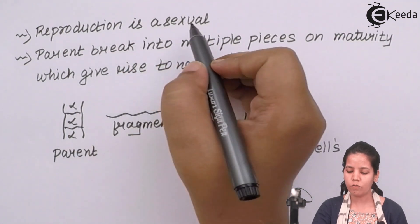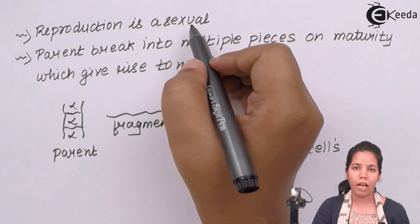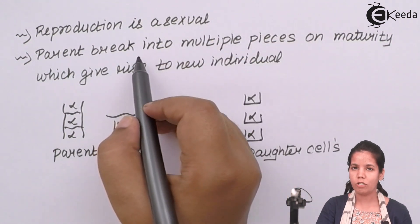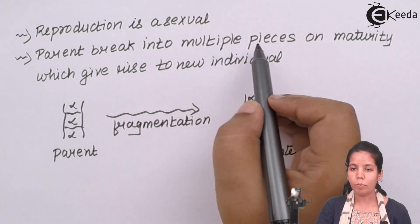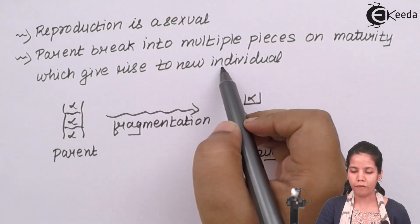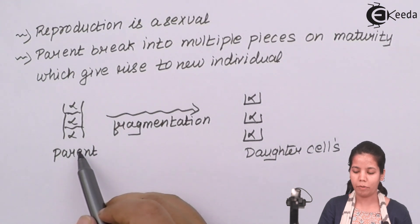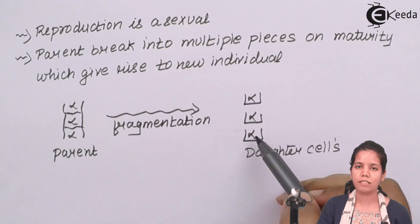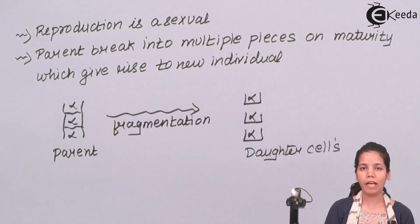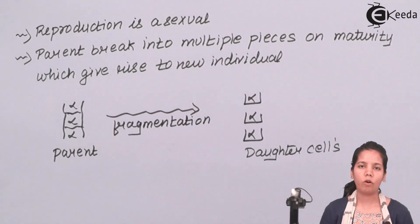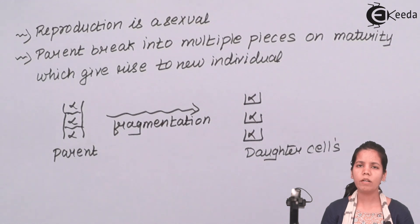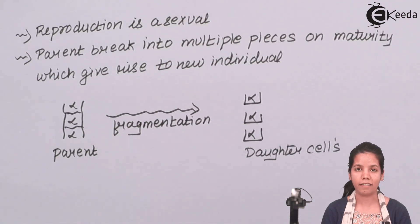Reproduction in algae is mostly asexual, but sexual reproduction also happens — in coloured algae this is isogamous or oogamous. During asexual reproduction, the parent breaks into multiple pieces on maturity and gives rise to new individuals through fragmentation, as seen in the diagram. In this part of the chapter we have covered algae: its habitat, reproduction, colonial characteristics, and examples. I hope you are all clear about this concept. Thank you.